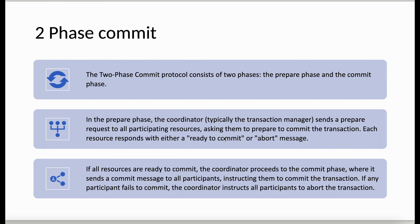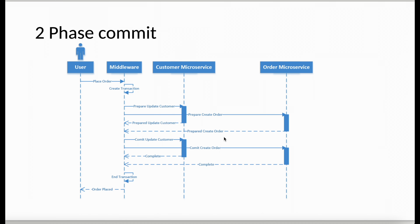If any of the participants fail to commit, the coordinator instructs all the microservices to abort the transaction. Let's understand this with a diagram. A user is placing an order, the middleware is the coordinator, and we have two microservices: a customer microservice and an order microservice. Once the request is placed it goes to the coordinator, which creates a transaction — let's call it transaction one. It then starts the prepare phase, sending prepare requests to all microservices involved.